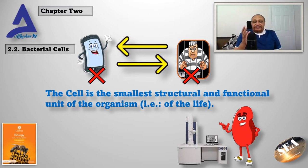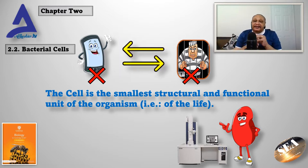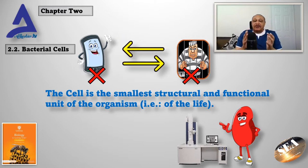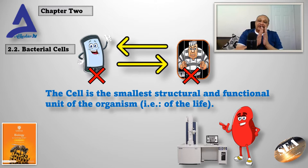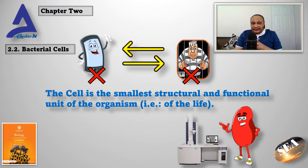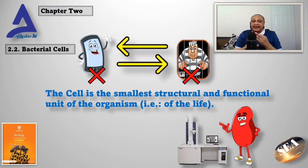We also agreed on two rules or bases. First, that the structure matches the function — so whenever we have a special structure, we will have a special type of functions. Also, the rule of three by three: when we compare the plant cell to the animal cell, we have three similarities — the cell membrane, cytoplasm, and nucleus — and three differences that belong only to the plant cell: the chloroplasts, the cell wall, and the permanent large vacuole.